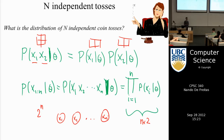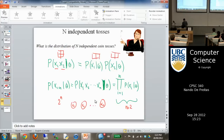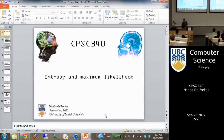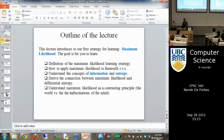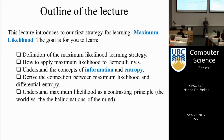The random variables here are the Xs, not the thetas — that's very important. Theta is a parameter. With that, let's get started. This is our first slide on learning. We're finally starting the topic of learning after doing some revision. Today, I'm going to introduce the first type of principle for doing learning, and that's the principle of maximum likelihood.